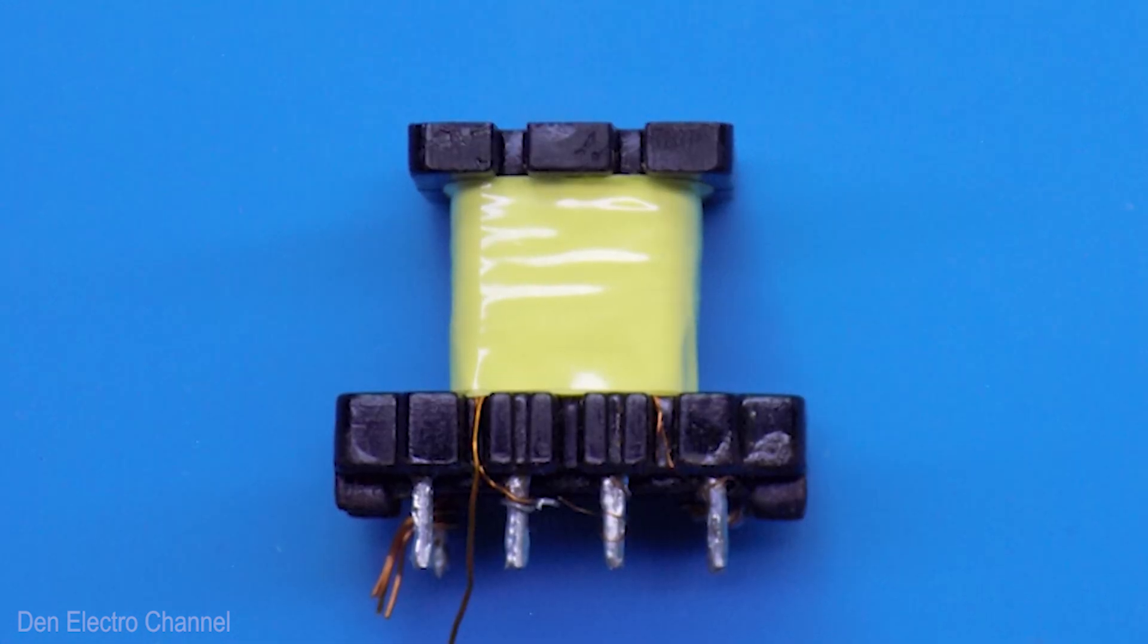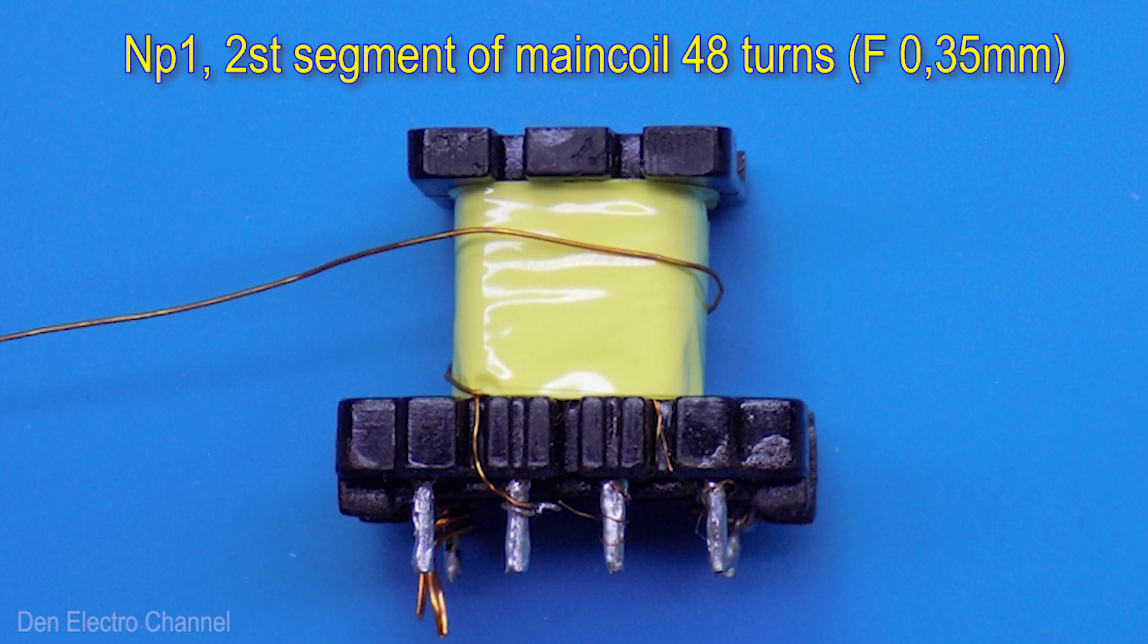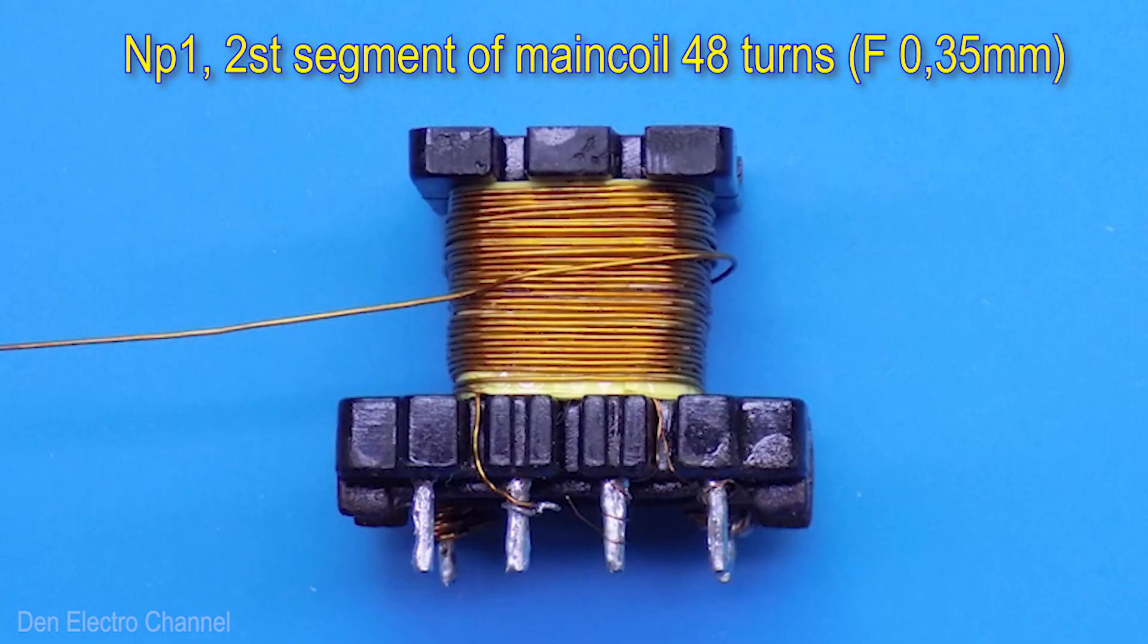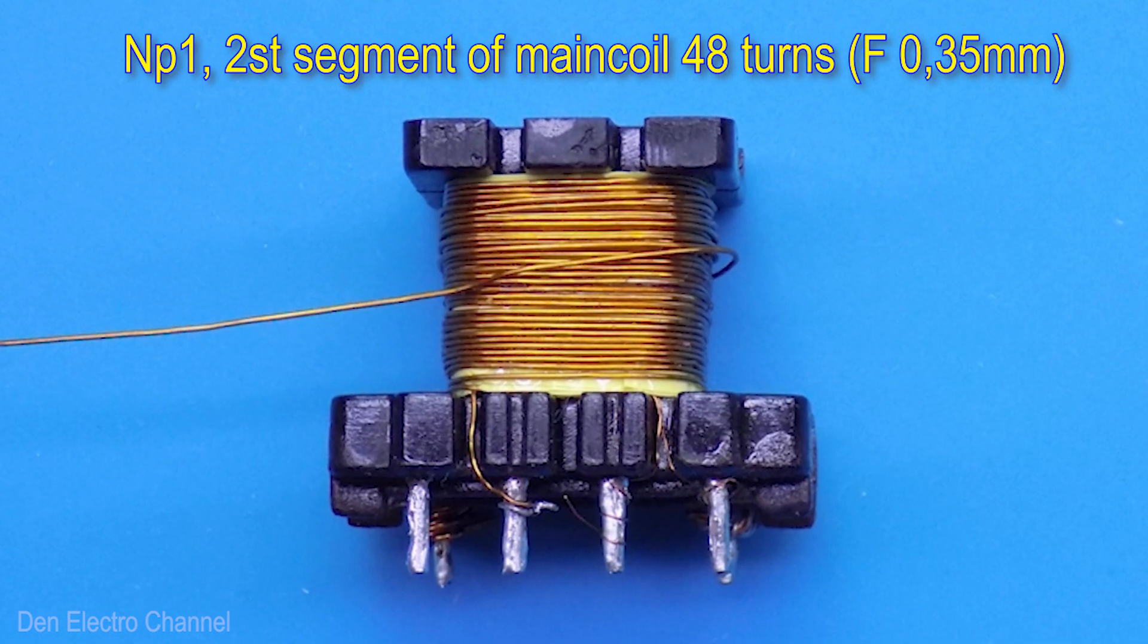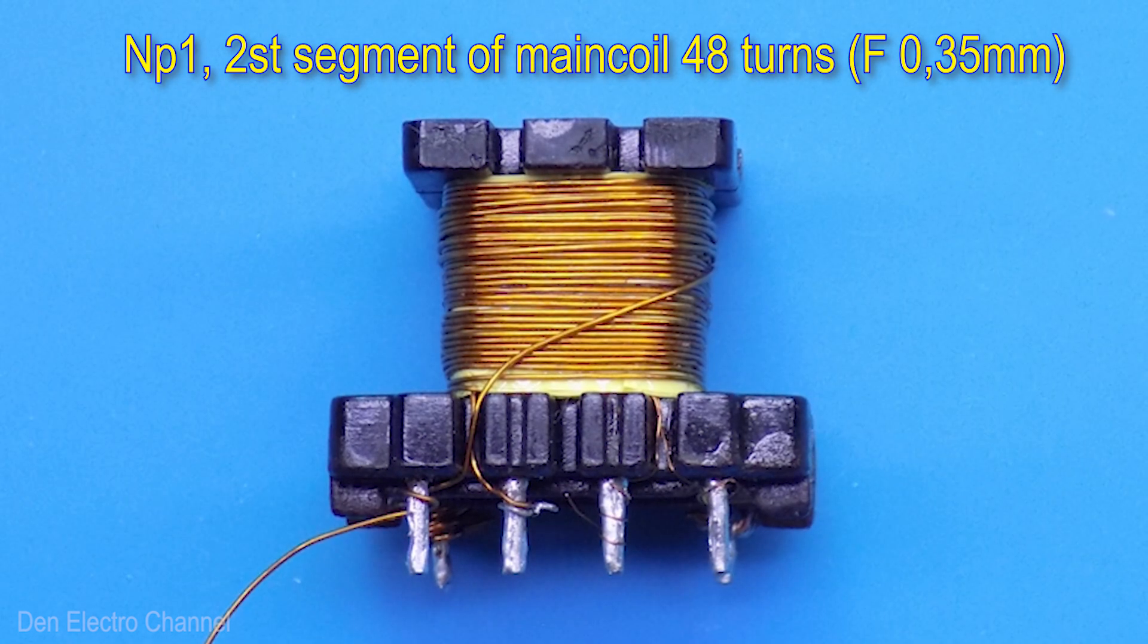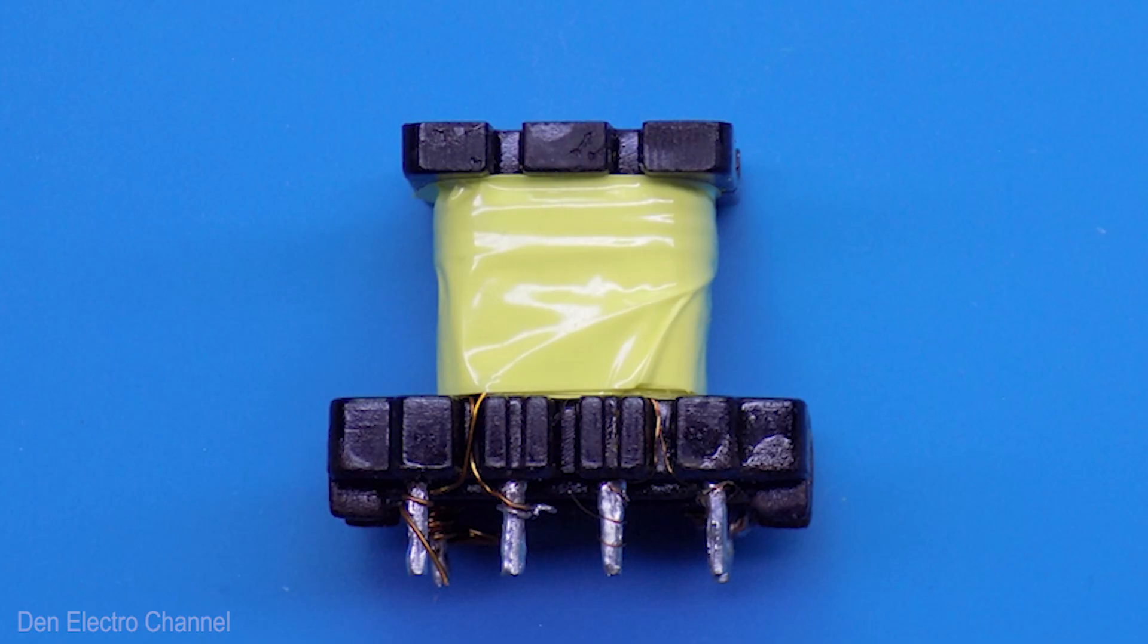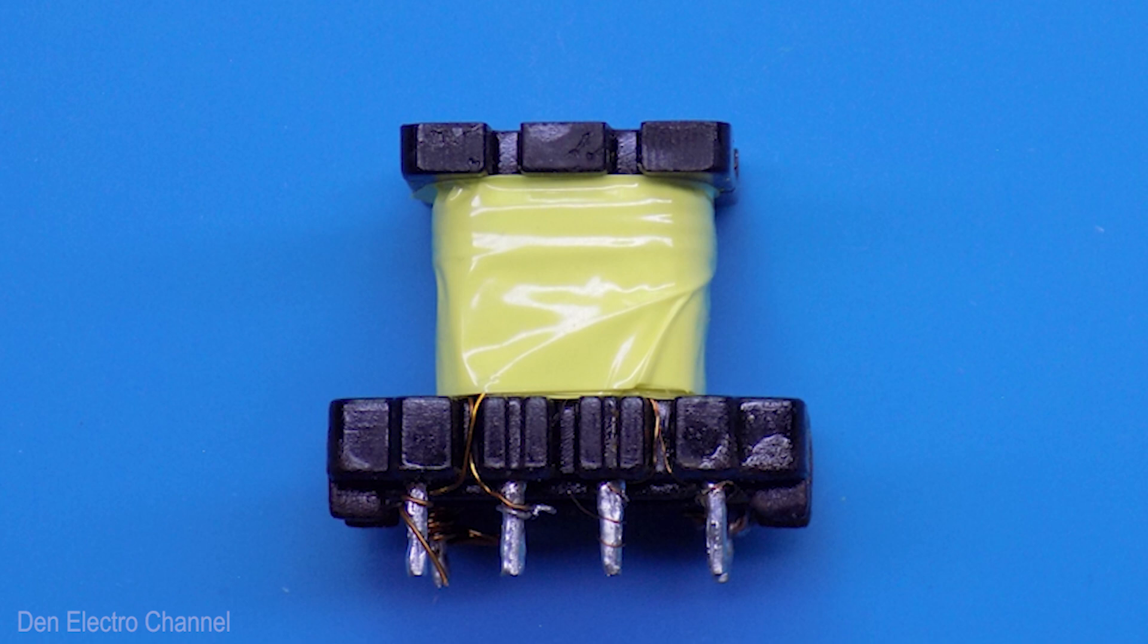I turn the frame back over to the high voltage side. I take the end of the wire that remains hanging on the first leg, and wind the second half of the primary winding. In the same direction, I wind another 48 turns from left to right. After the wire comes out on the right side, I lower it and wrap it around the first leg. Then, I insulate the outside. This completes all the windings.